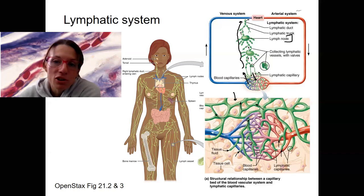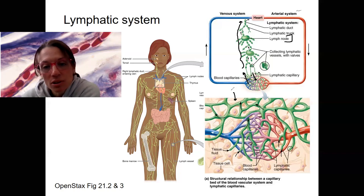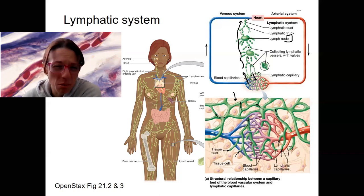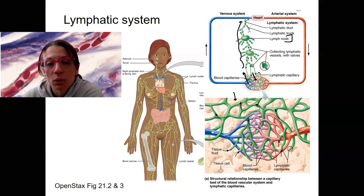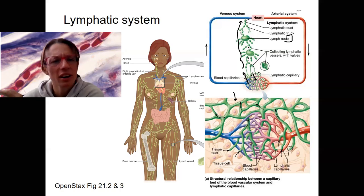However, there are other lymphatic organs in addition to just these vessels and nodes. So I'm going to tell you about some of them. There are some lymphatic organs that have primary lymph function and some that have secondary.